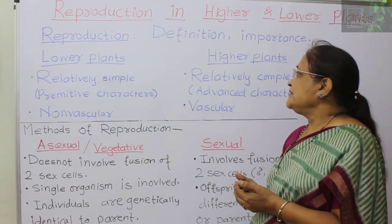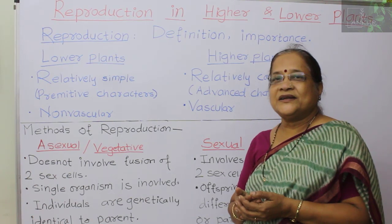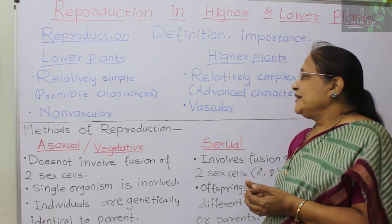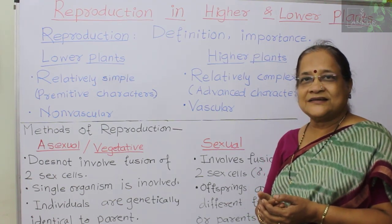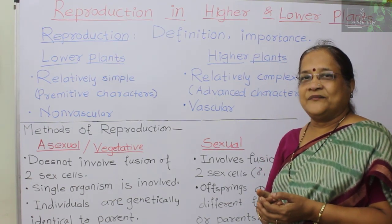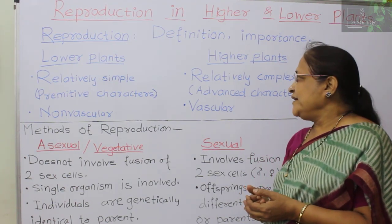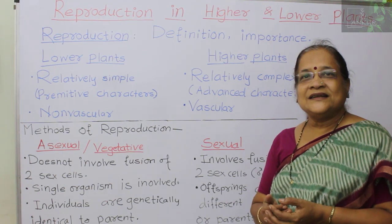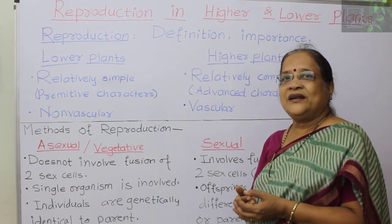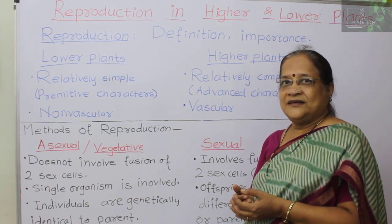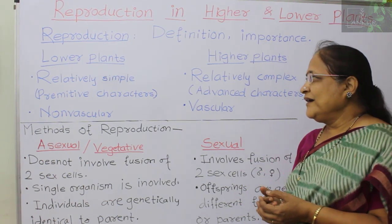The second group is higher plants. These higher plants are comparatively complex and show advanced characters. For example, they have conducting tissue — that is xylem and phloem — and all vascular plants, including angiosperms, belong to this group. These are some basic differences between lower plants and higher plants.